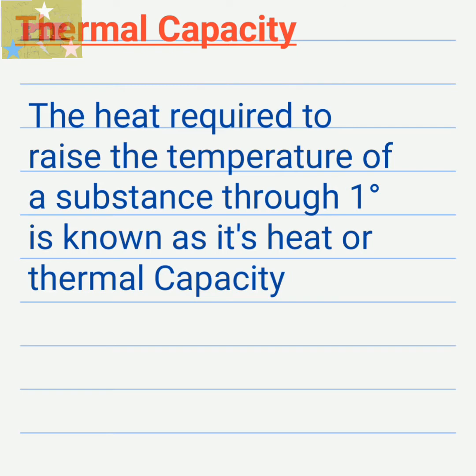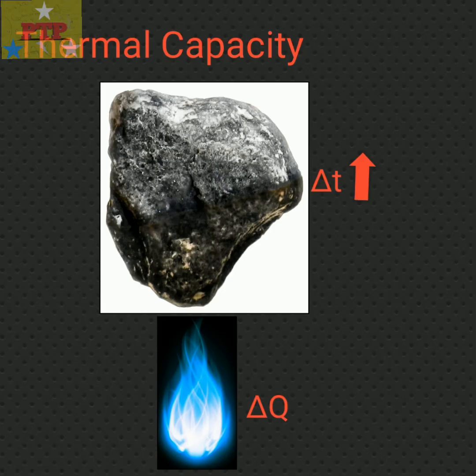Thermal capacity: the heat required to raise the temperature of a substance through one degree is known as its heat or thermal capacity. Consider a body of mass m where heat supplied to the body is delta Q, and due to the heat, the rise in temperature of the body is delta t.